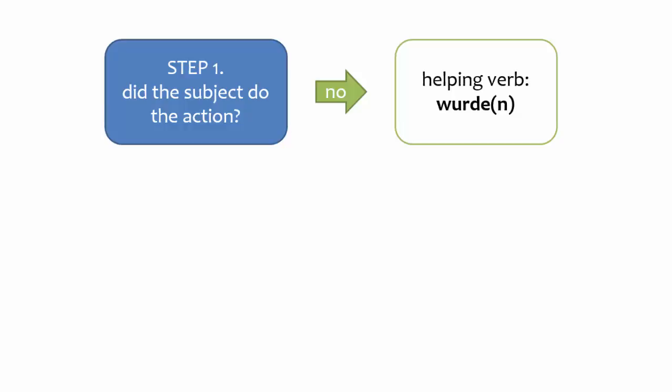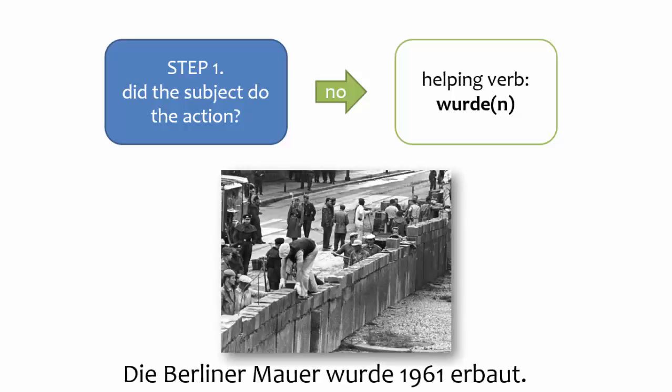This formation of werden and the past participle is known as the passive. To give an example, let's say you want to indicate that the Berlin Wall was built in 1961. Ask yourself whether the Berlin Wall did the action, or had the action done to it. The wall obviously did not build itself, so the answer to that question is no. This means that the correct helping verb is würde.